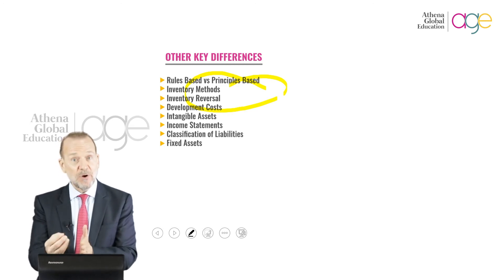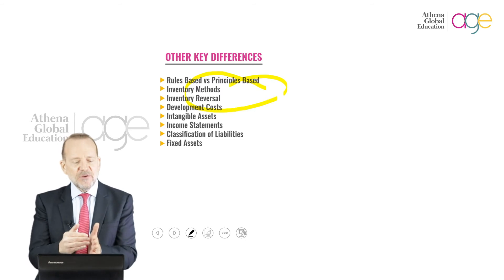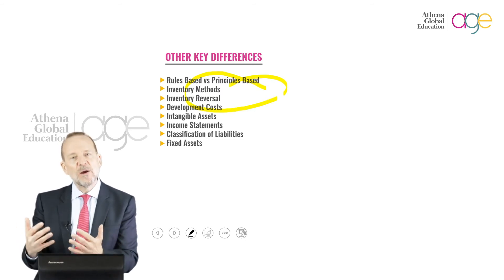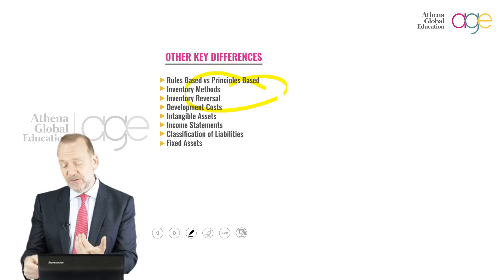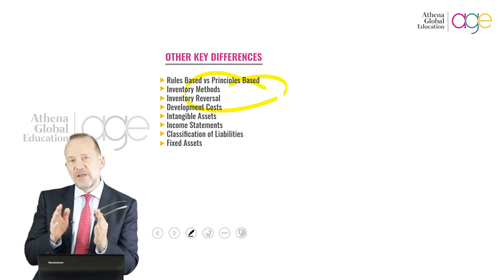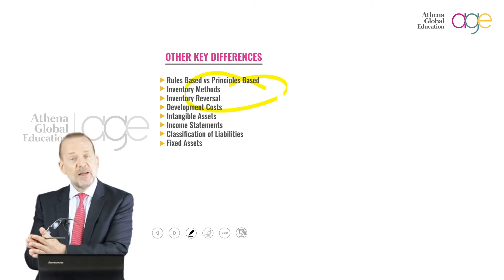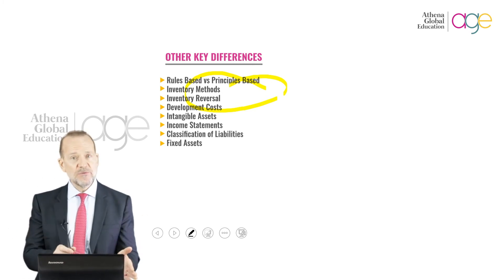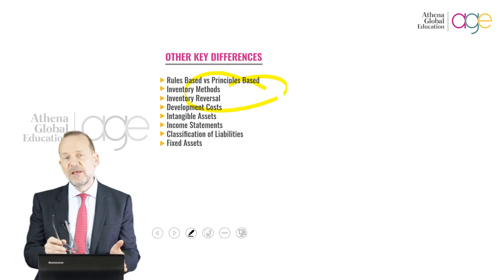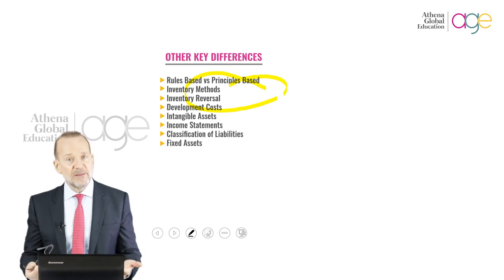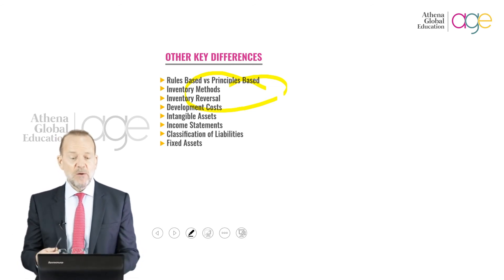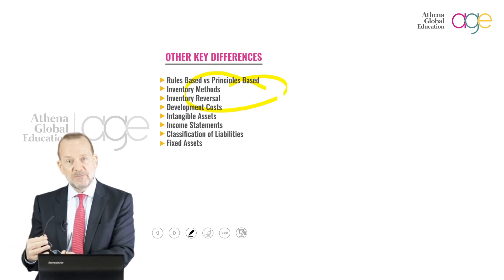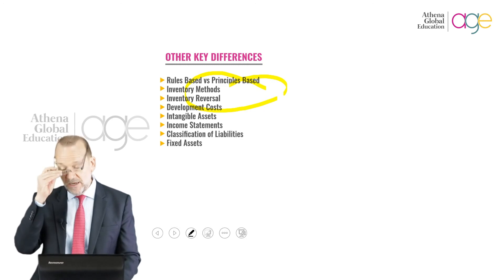That goes towards principles — what is the most useful part of that information, not necessarily what the rules dictate or allow, but principally speaking, where will we get the most benefit from that financial information? IFRS attempts to go in that direction, and in many ways it's very successful. That's a key differentiator: GAAP is strictly rules-based and historically oriented, whereas IFRS has attempted to go towards a more principle-based basis of accounting and reporting.